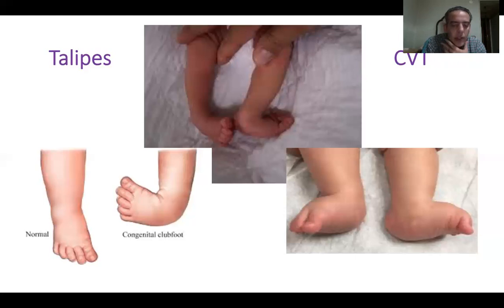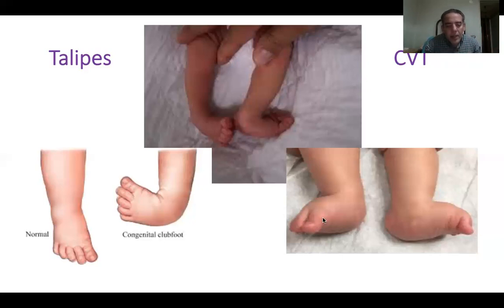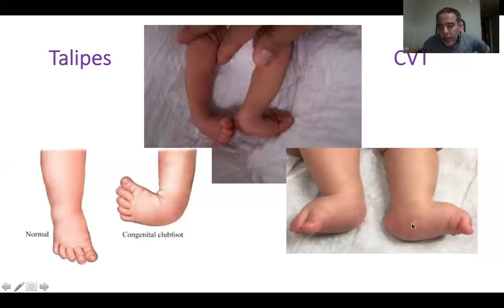The obstetrician tells the mother that the foot is deformed and that she should seek orthopedic or pediatric consultation. When the mother comes to you, she says the baby's foot is deformed — it's inverted, curved, not looking normal. In congenital vertical talus, the mother tells you the foot arch looks abnormal, as if the foot is like a rocker — hence the name rocker bottom foot.